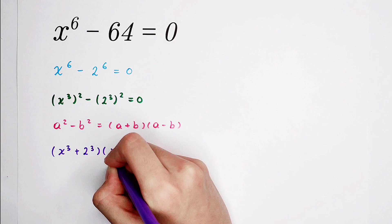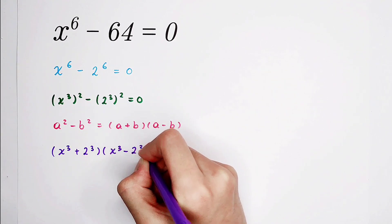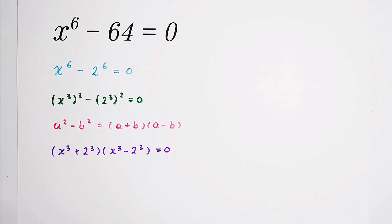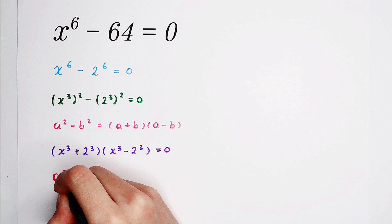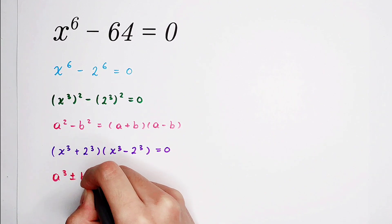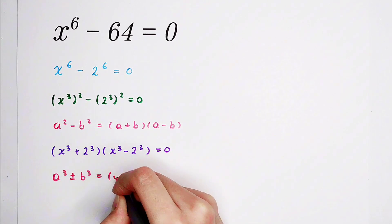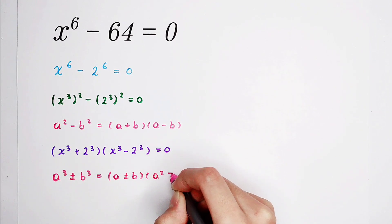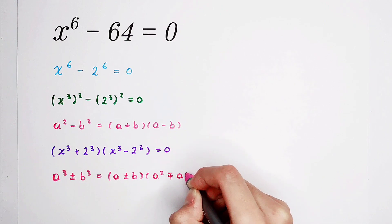So it is x cubed plus 2 cubed times x cubed minus 2 cubed equals 0. Then we can use another formula, a cubed plus or minus b cubed. It is a plus or minus b times a squared minus or plus ab plus b squared.